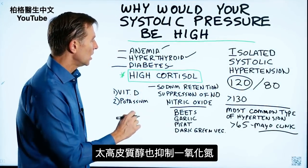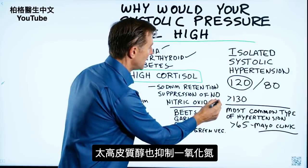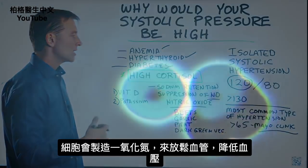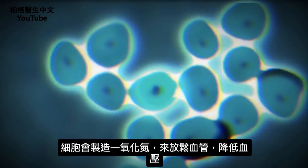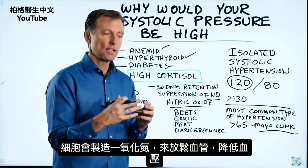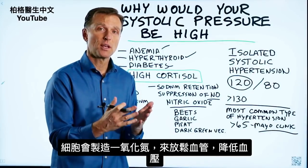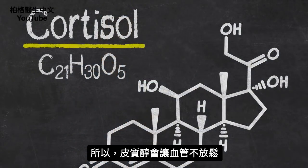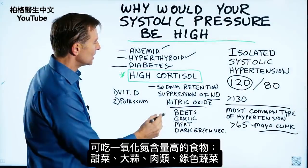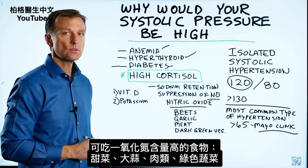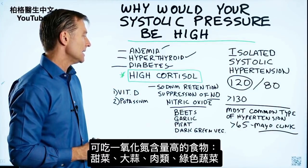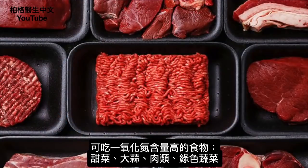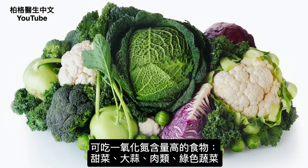High cortisol will also cause suppression of nitric oxide. Nitric oxide is a natural substance that our cells produce as a vasodilator to relax the blood vessels and reduce blood pressure. So cortisol suppresses that. In addition, you can consume certain foods that are high in nitric oxide, like beets, garlic, meat, and dark leafy green vegetables.